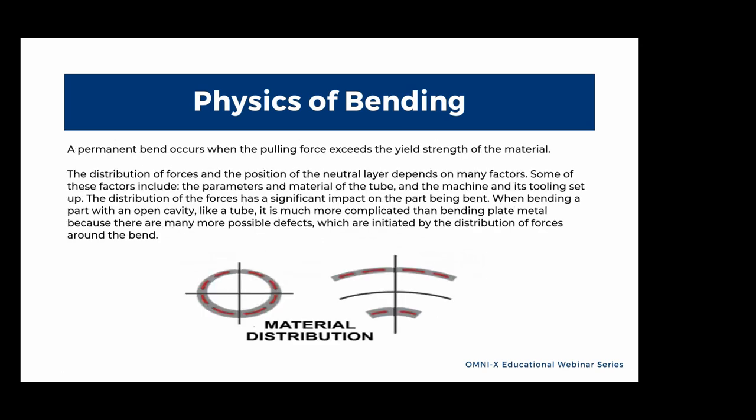A permanent bend occurs when the pulling force exceeds the yield strength of the material. The distribution of forces and position of the neutral layer depends on many factors, including the parameters and material of the tube, and the machine and its tooling setup. The distribution of forces has a significant impact on the part being bent.